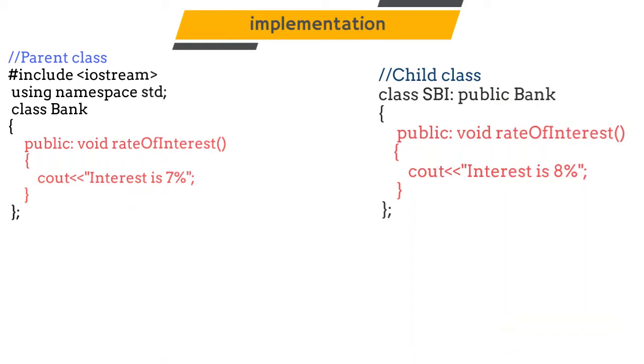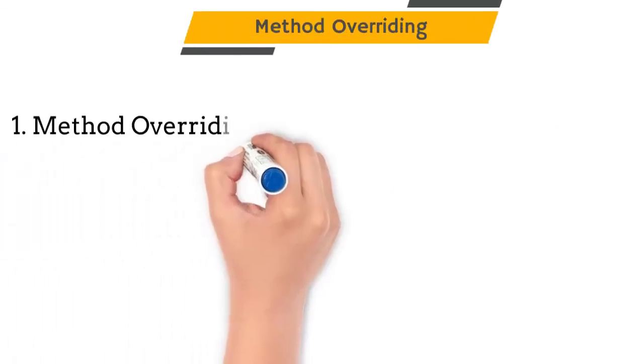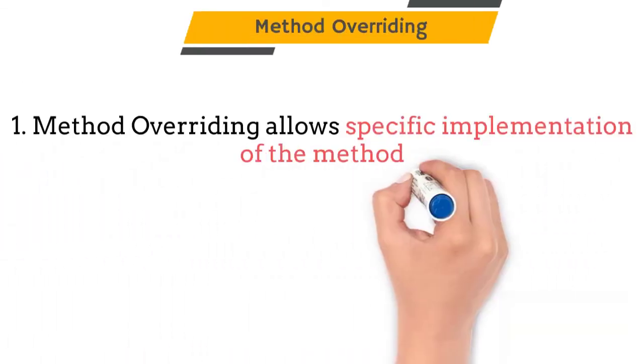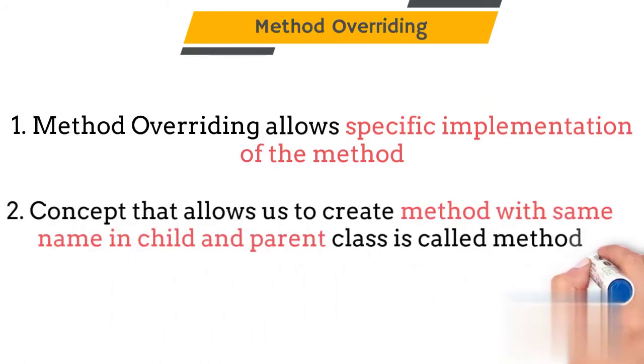Now we will create a second child class called HDFC. So our method in this child class will print rate of interest is 6%. That means we have provided the specific implementation of our method in a child class.